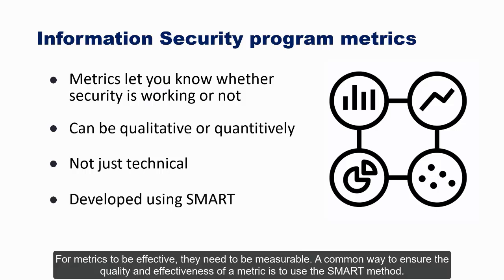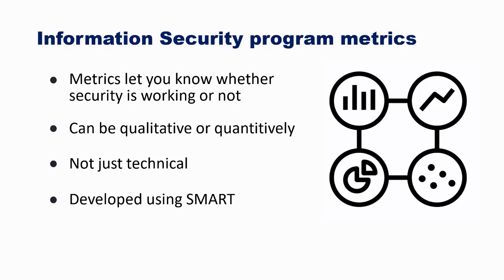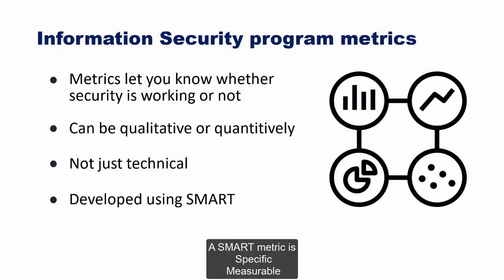For metrics to be effective, they need to be measurable. A common way to ensure the quality and effectiveness of a metric is to use the SMART method. A SMART metric is: Specific, Measurable, Attainable, Relevant, and Timely.